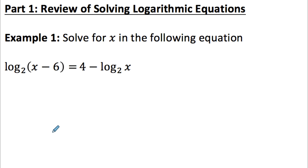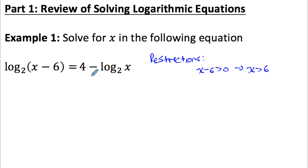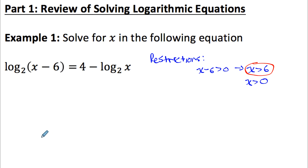Remember when solving a logarithmic equation you may end up with an extraneous root — an answer that doesn't actually satisfy the original equation. Any answers we get have to make both logarithmic expressions defined. Logarithmic expressions are only defined when the argument is positive, so I'll write my restrictions: x minus 6 must be greater than zero (x > 6), and x must be greater than zero. Any answer must satisfy both conditions, so let's make sure our answers are bigger than six.